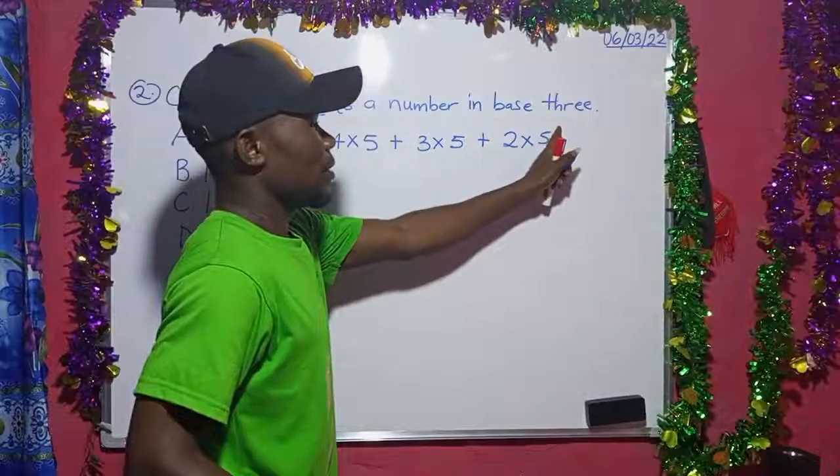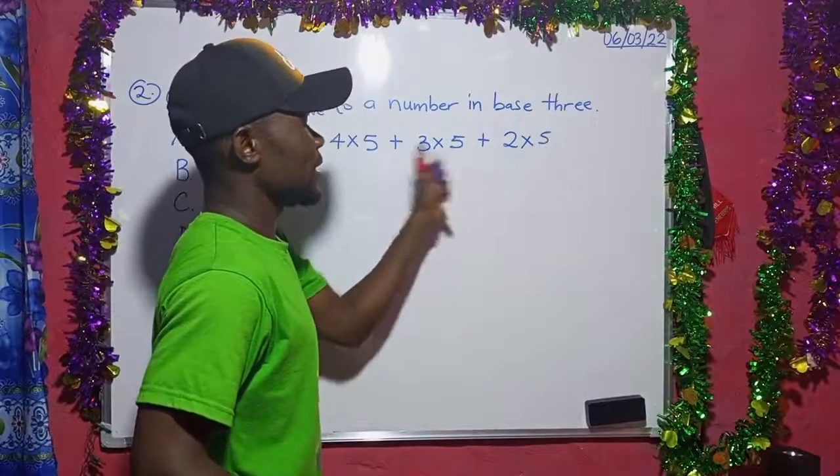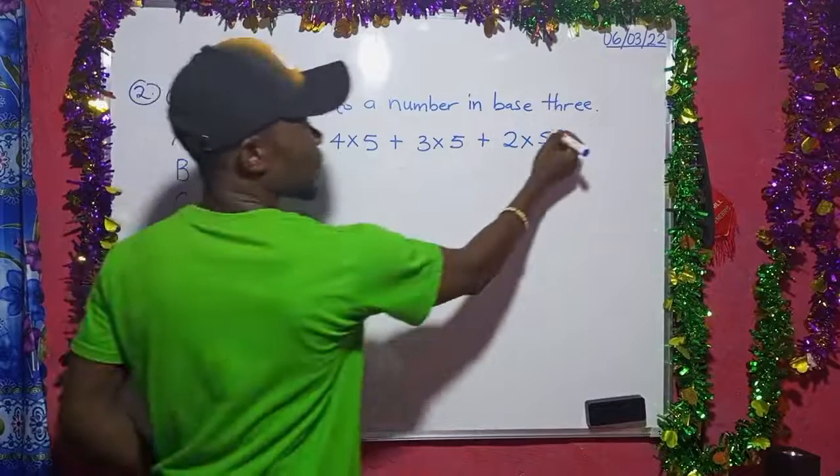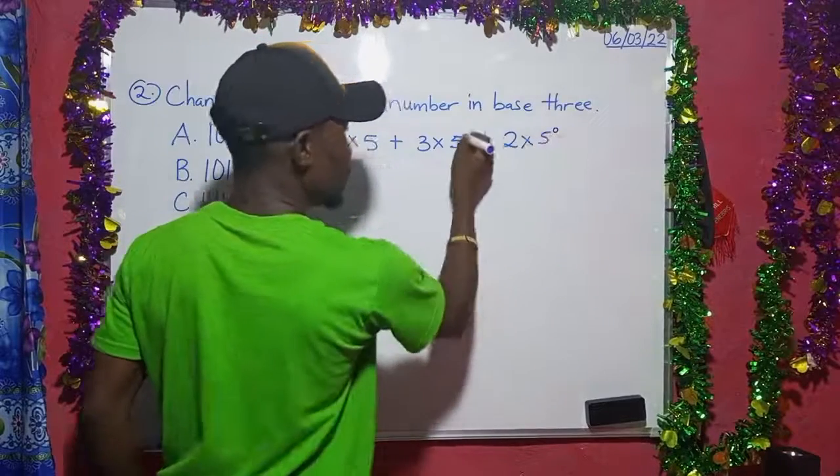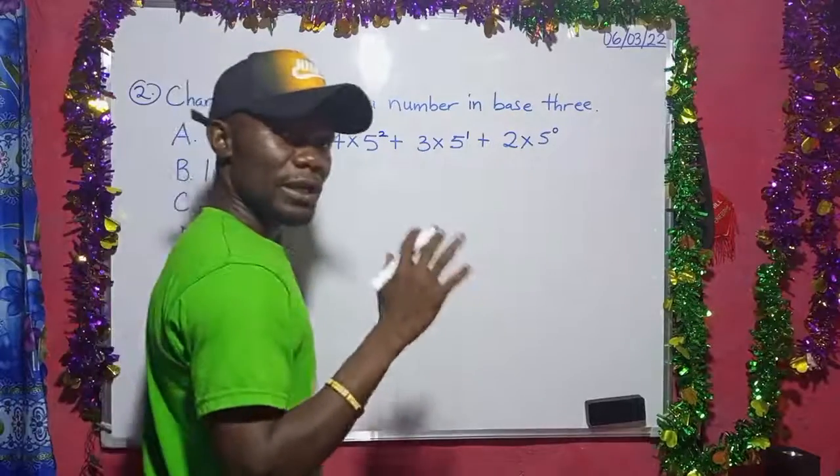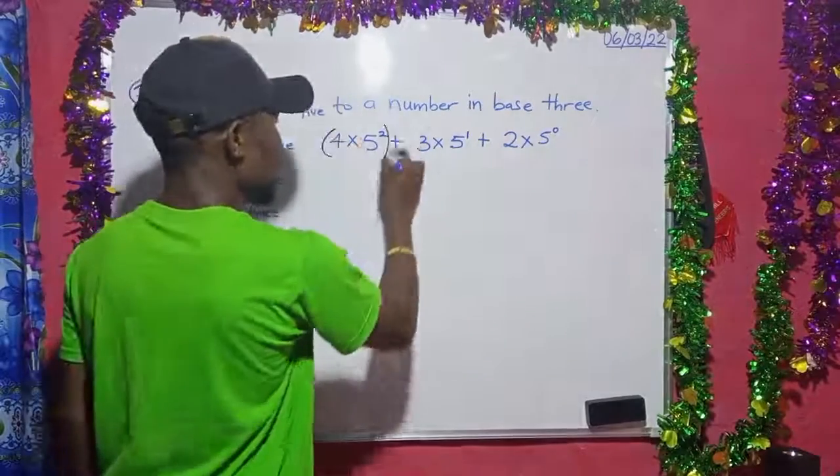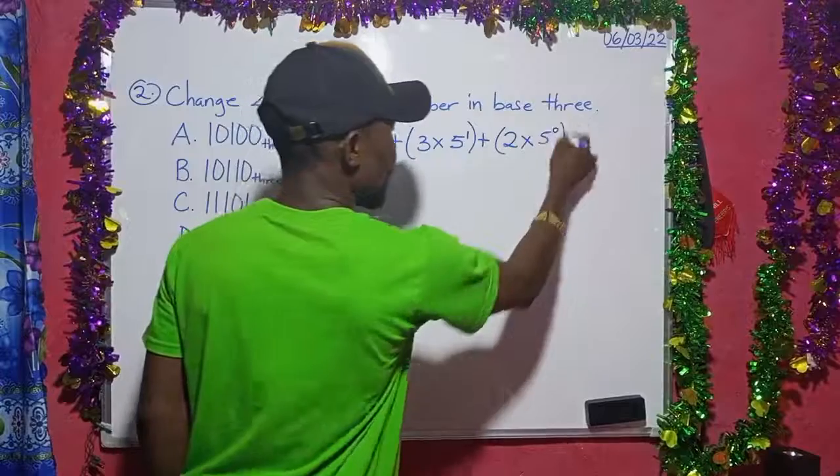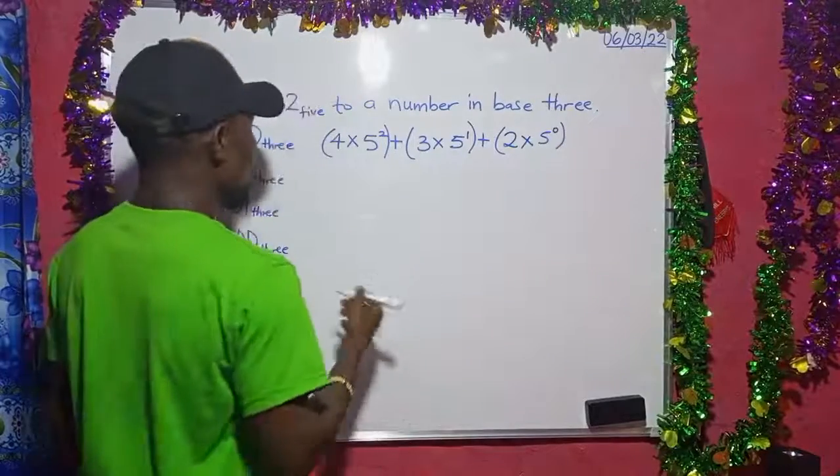So we write our exponents starting from the right to the left: 0, 1, 2. That is a rule. It is acceptable. So put it in parentheses because we respect the rules of BODMAS.